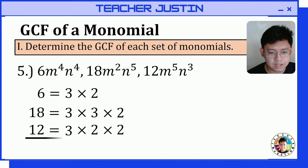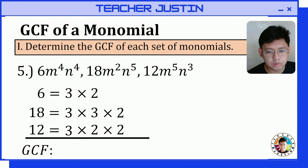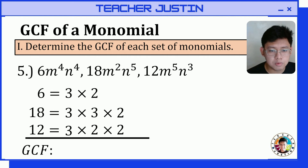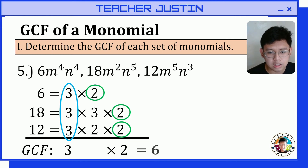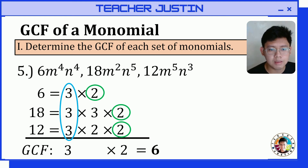Now let's get the common factors of 6, 18, and 12. We have a common factor of 3 and a common factor of 2. Multiplying them: 3 times 2 equals 6. So the greatest common factor of our numerical coefficients is 6.